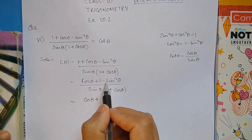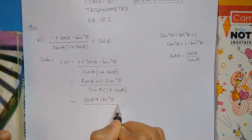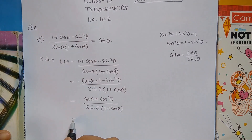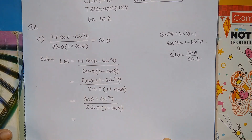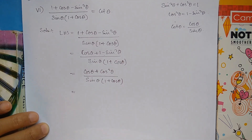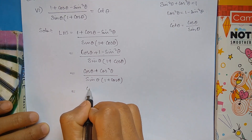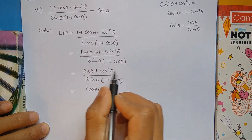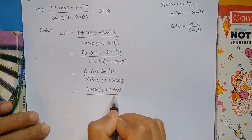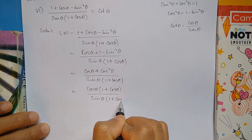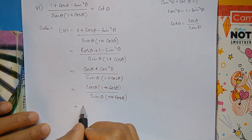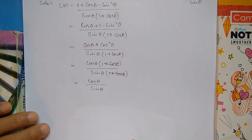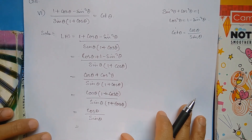The formula is cos square theta is equal to 1 minus sin square theta. If you want to see cos square theta. Now you are going to get sine theta times 1 plus cos theta. So the next step is cos theta plus cos square theta. This is common.